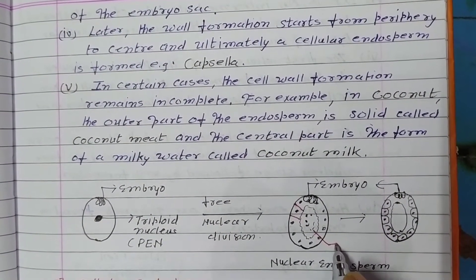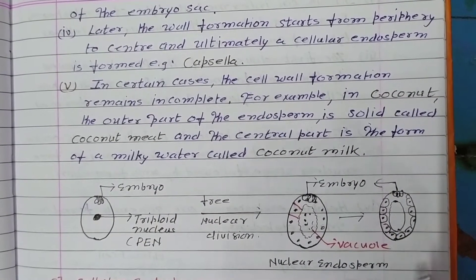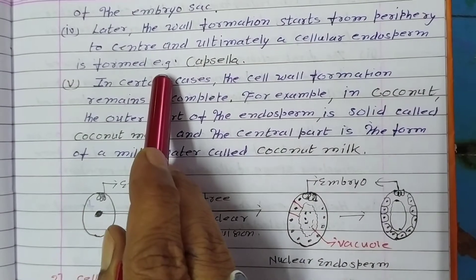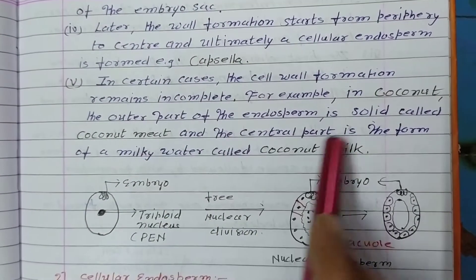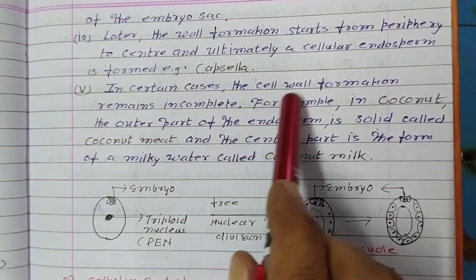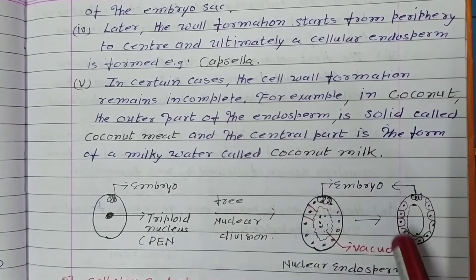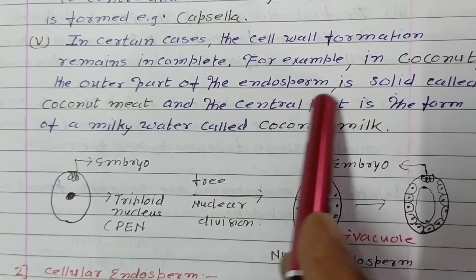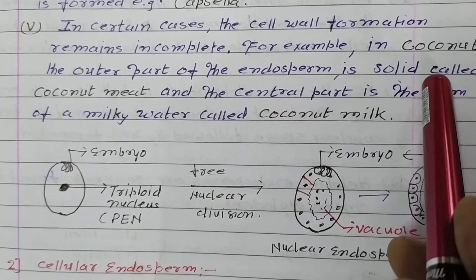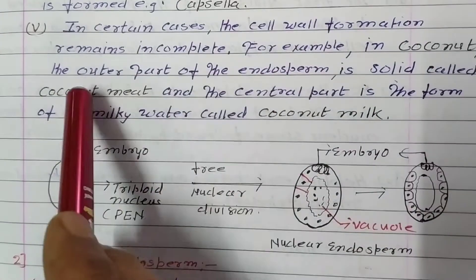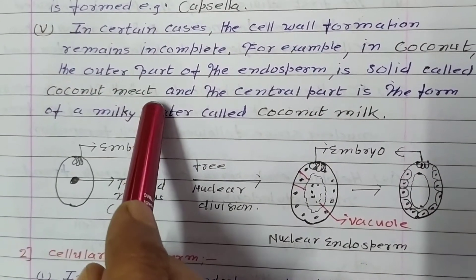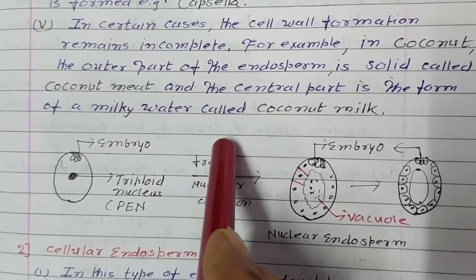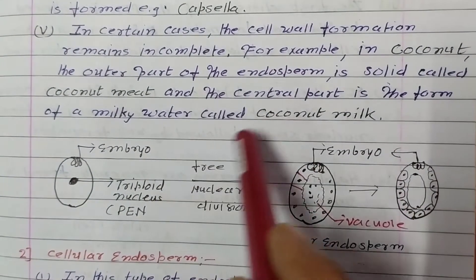In certain cases, the cell wall formation remains incomplete. This is seen in coconut — the outer part of the endosperm is solid (the white portion of coconut is solid endosperm), and the liquid in the center is called milky water or coconut milk. So coconut is a good example of nuclear endosperm.